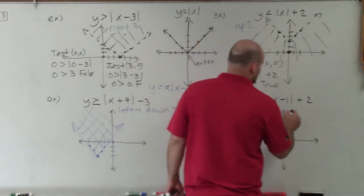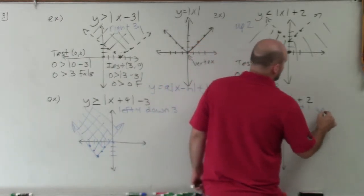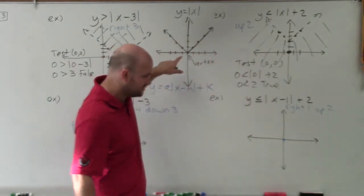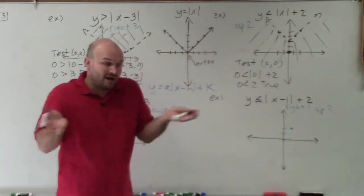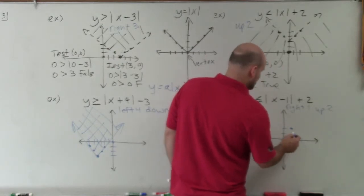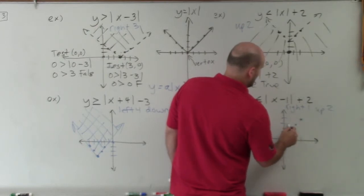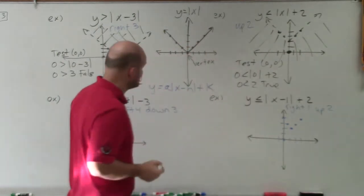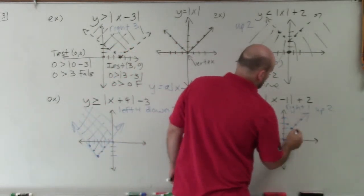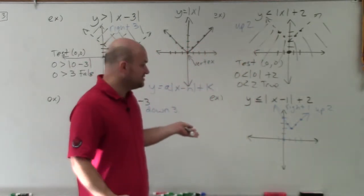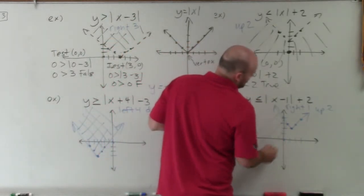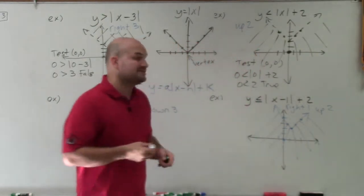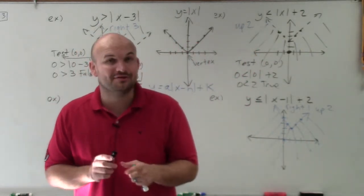For the fourth example, I have x minus 1, so that's going to be shift right 1, and then up 2. My vertex originally at (0, 0) goes to (1, 2). I graph the V from there: over 1, up 1 in both directions. This is less than or equal to, so this is a solid line. Since y is isolated on the left and it's less than or equal to, all the points below it are going to be true. And that is how you graph an absolute value inequality.